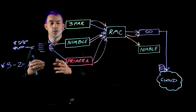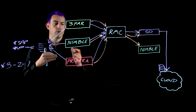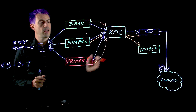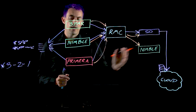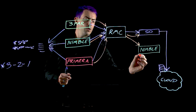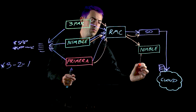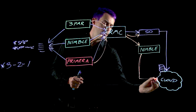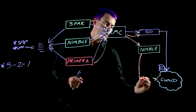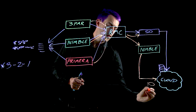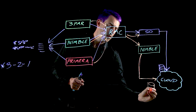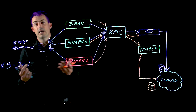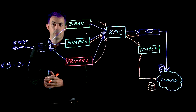You can use RMC to seamlessly move those snapshots between environments, and just like StoreOnce can go to the cloud via Cloud Catalyst, you can also use Nimble to take those snapshots to the cloud via Nimble Cloud Volumes, now known as HPE Cloud Volumes.